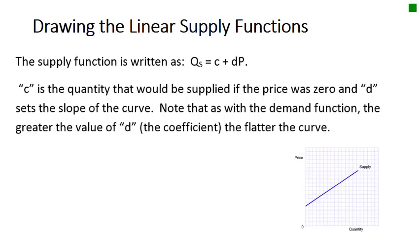Now we're going to look at drawing the linear supply function. The form is QS = c + dp. It has a positive relationship between price and quantity supplied — as price increases, quantity supplied increases, and as price decreases, quantity supplied decreases. C is the quantity supplied if the price were zero, and d sets the slope of the curve. As with the demand function, the greater the value of d, the flatter the curve; the smaller the value, the steeper.